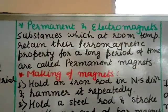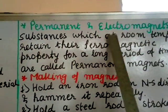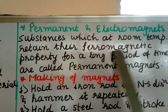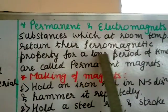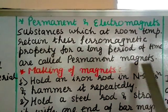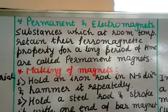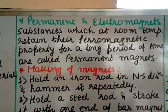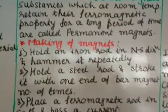First we will do permanent magnets. Substances which at room temperature retain the ferromagnetic property for a long period of time are called permanent magnets. That means they will not be easily demagnetized. They will be called permanent magnets.